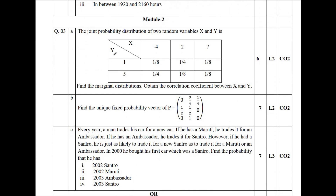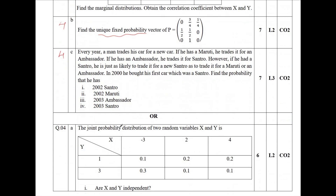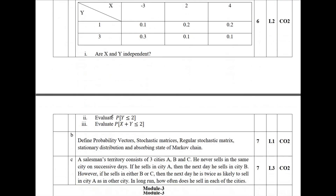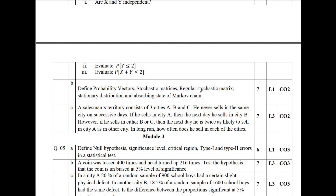Module 2 is on joint probability and Markov chain or stochastic process. Question number 3a and 4a will both be on joint probability distribution. Question number 3b, 4b, 3c, and 4c will be on Markov chain problems — including finding the unique fixed probability vector, regular stochastic process, stationary distribution, and absorbing state. It is very easy to score 20 out of 20 from this module, whether you are expecting passing marks or 100 out of 100.